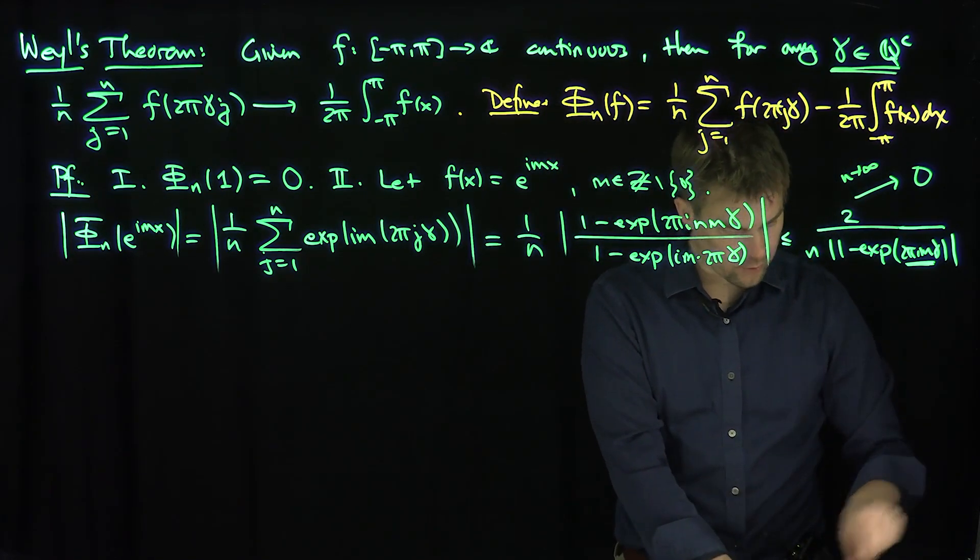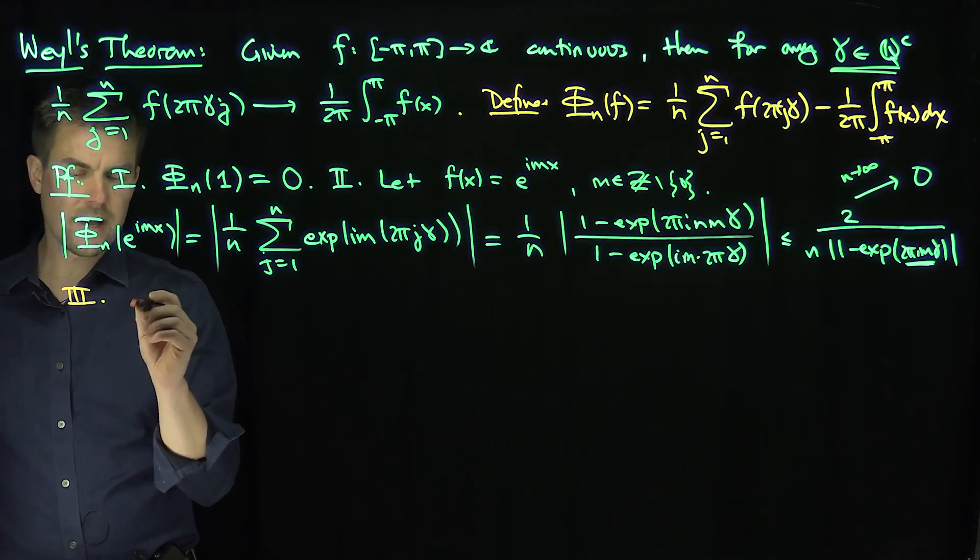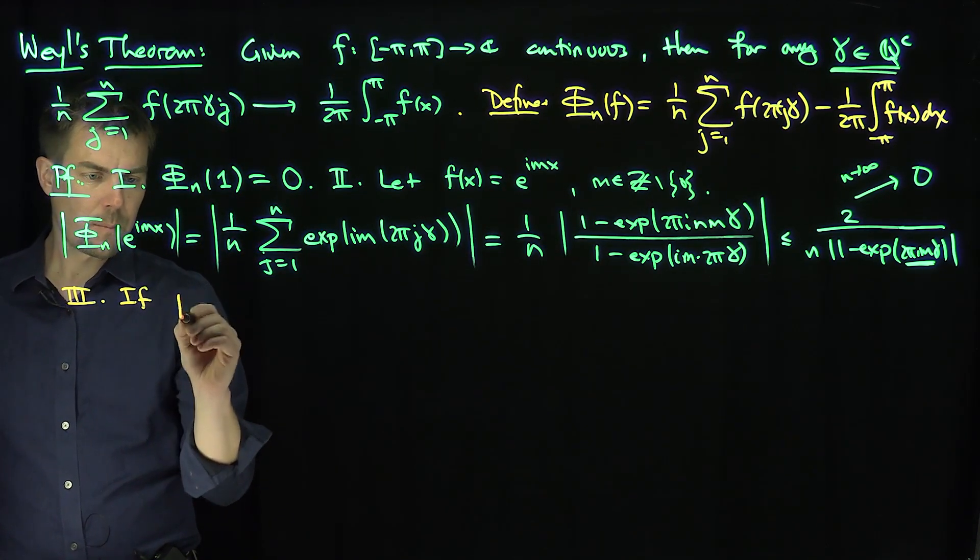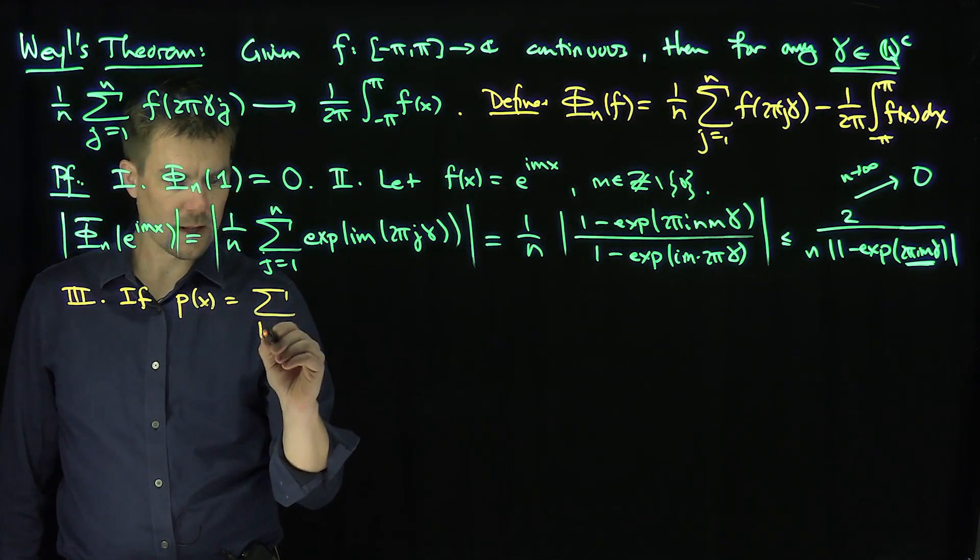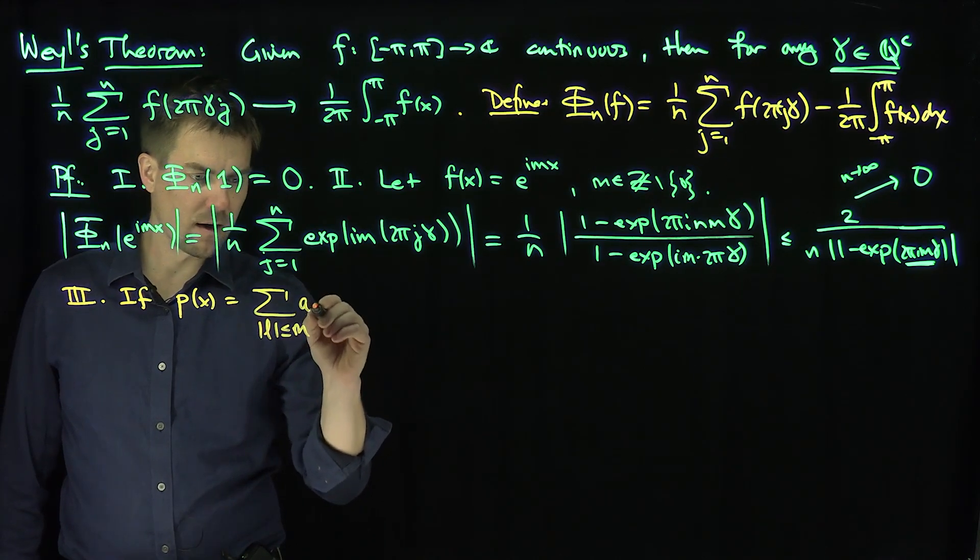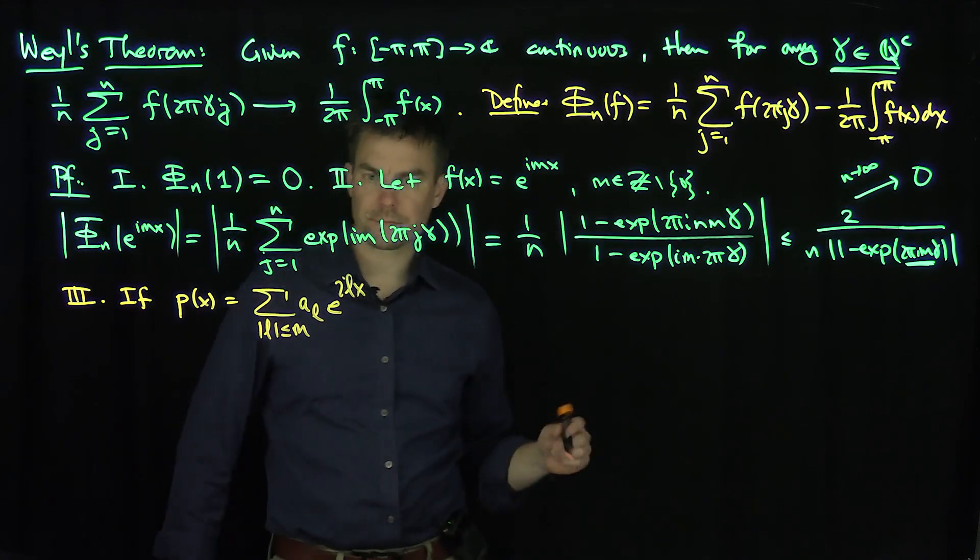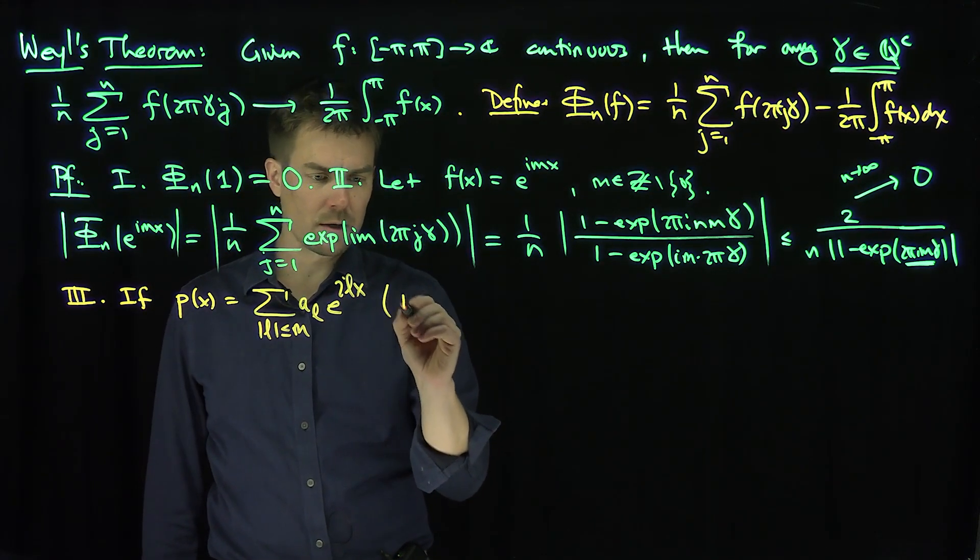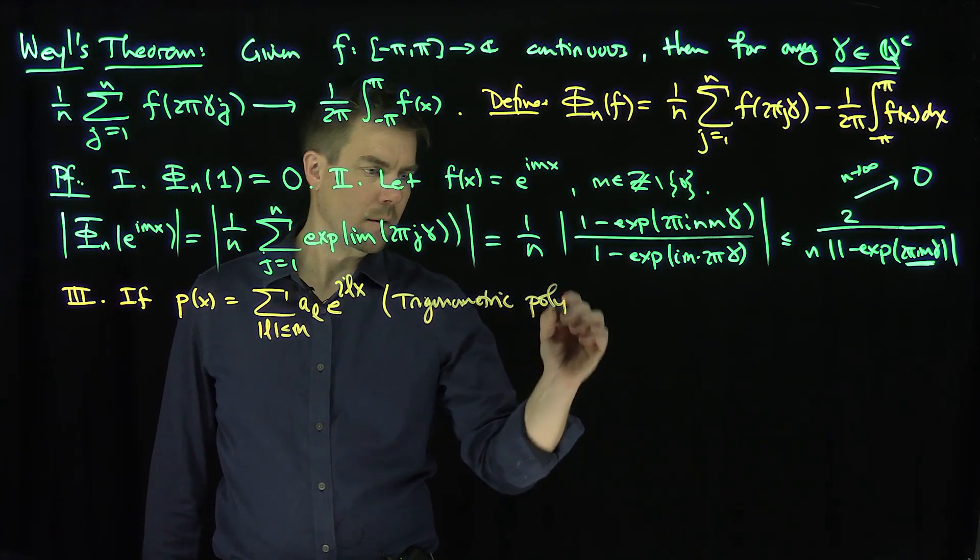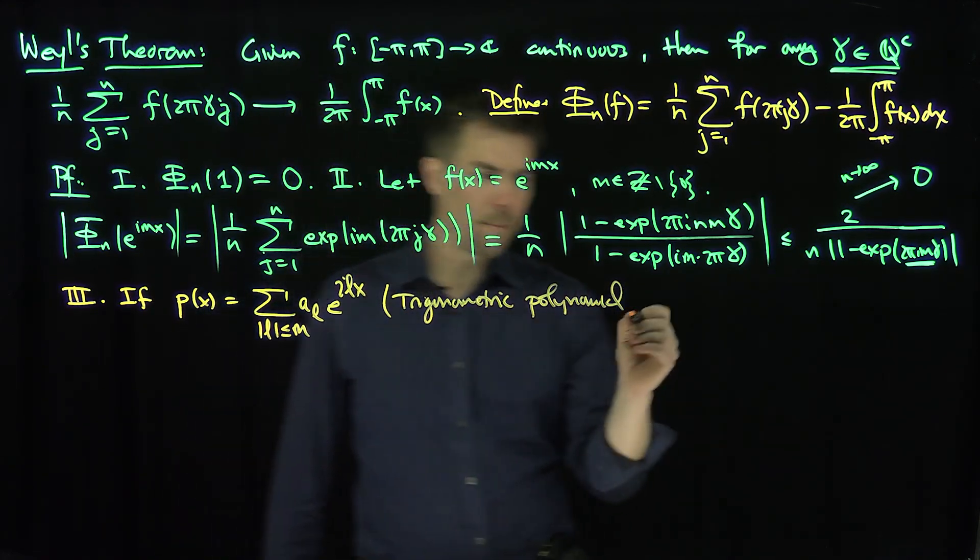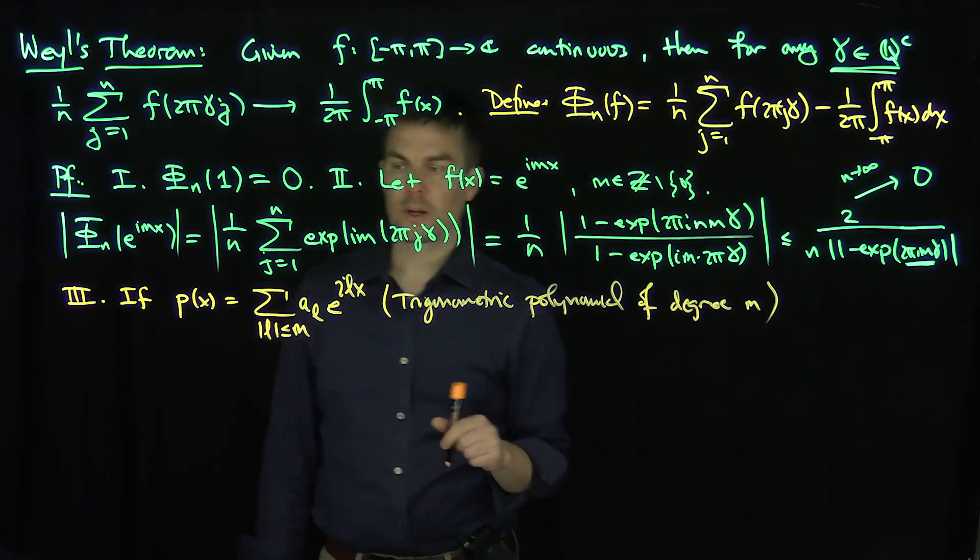Excellent. All right, what's the next thing to observe? The next thing to observe, that's part 2. And so now part 3 is that if p of x is the sum l less than or equal to some number m of a_l e to the ilx, like this, then these are just trigonometric polynomials of degree m.